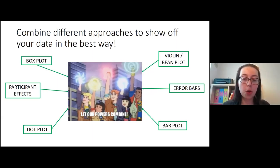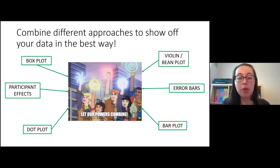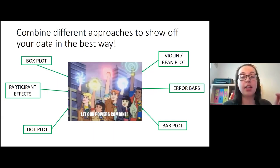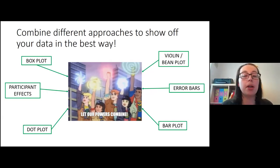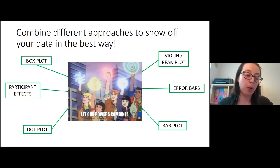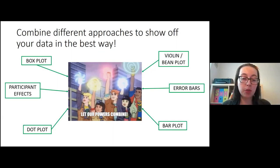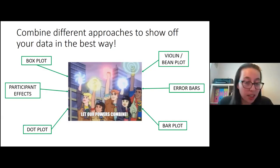The same point applies to box plots: you can have the same median and upper/lower quartiles caused by different raw data points and distributions, so it's not just bar plots I'm picking on. The best approach is to combine different plot types — ideally something showing your summary statistics (bar plot, box plot, or error bars) combined with something showing your underlying distribution and broad data (violin plot or dot plot with participant effects).